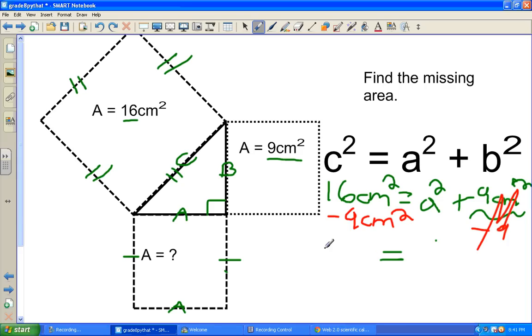And now we're left with 7 centimeters squared on this side equals A squared.